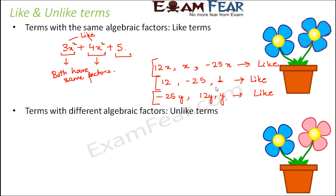Unlike terms are terms with different algebraic factors. For example, if we compare minus 25y with minus 25x, they both have the same numeric factor — that is minus 25 — but their algebraic factors are different. So these two are unlike terms. Whether numeric factors are same or different doesn't matter; if algebraic factors are same, they are like terms, and if algebraic factors are different, they are unlike terms.